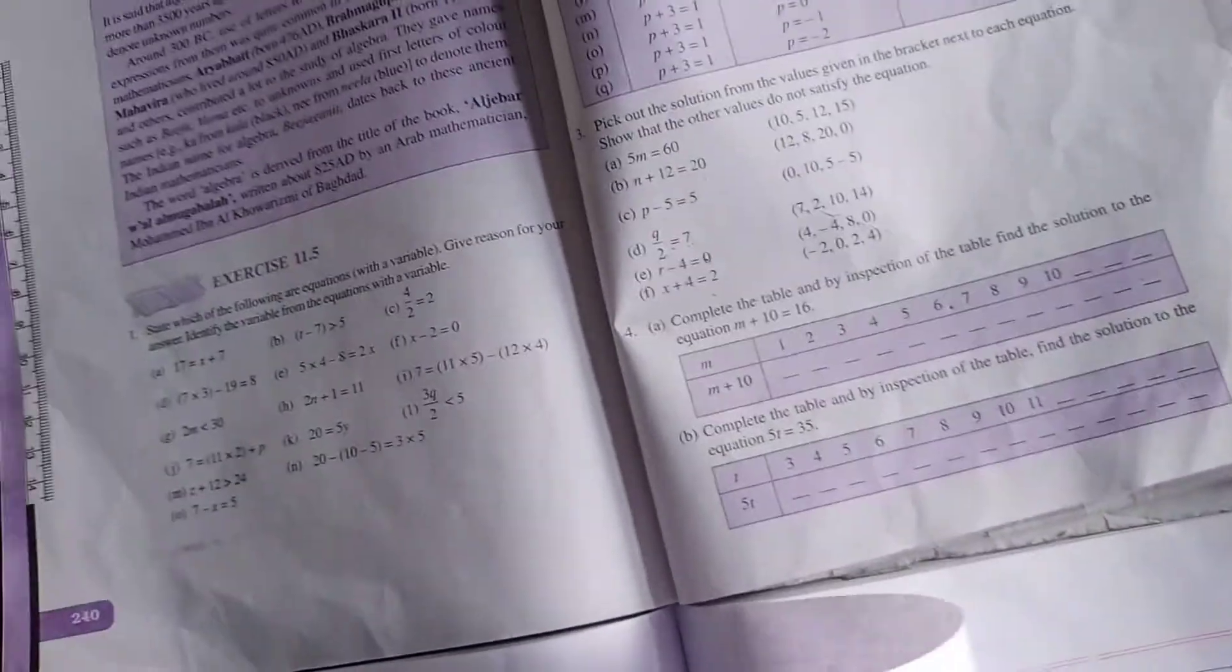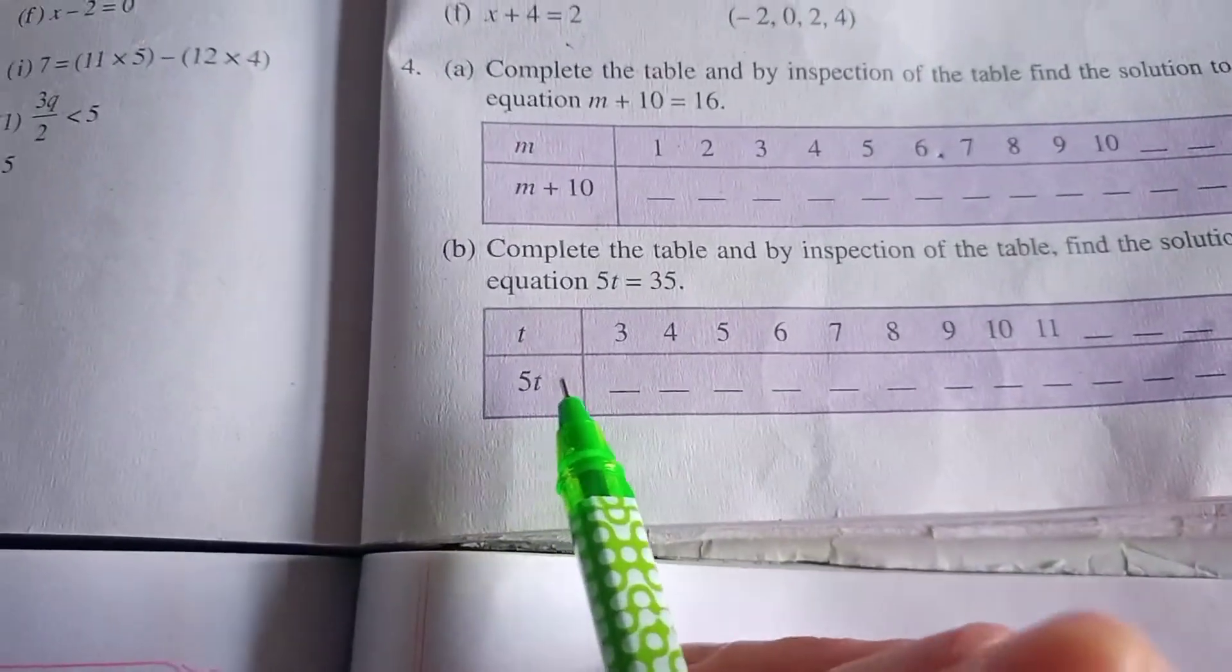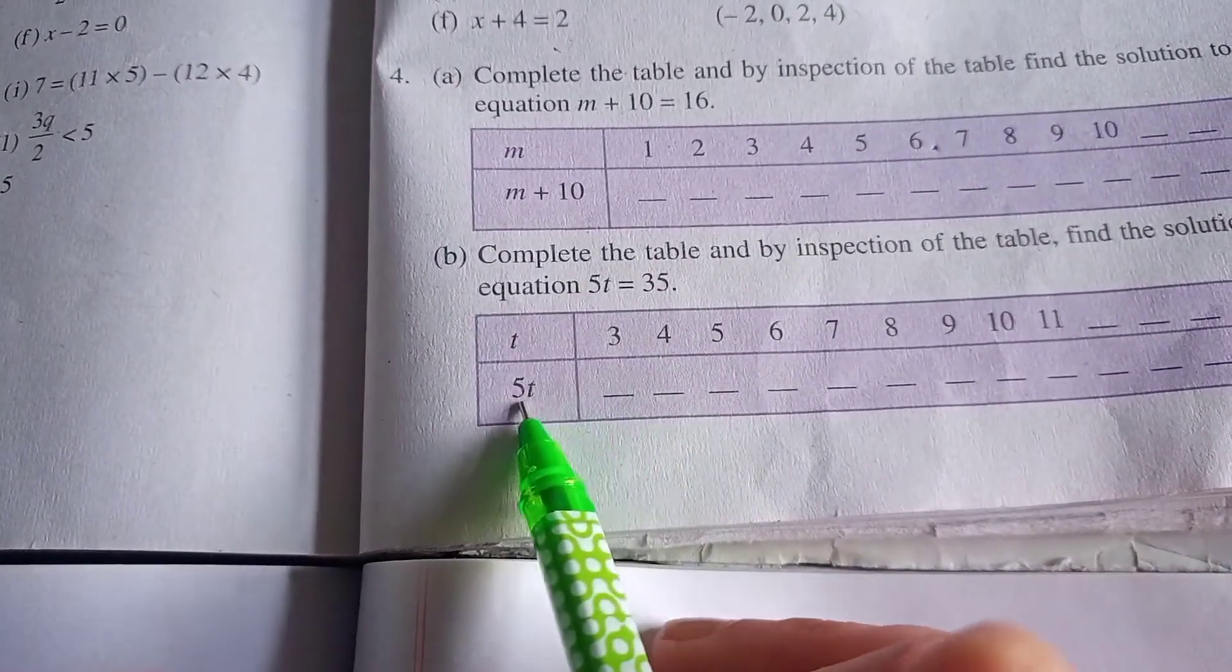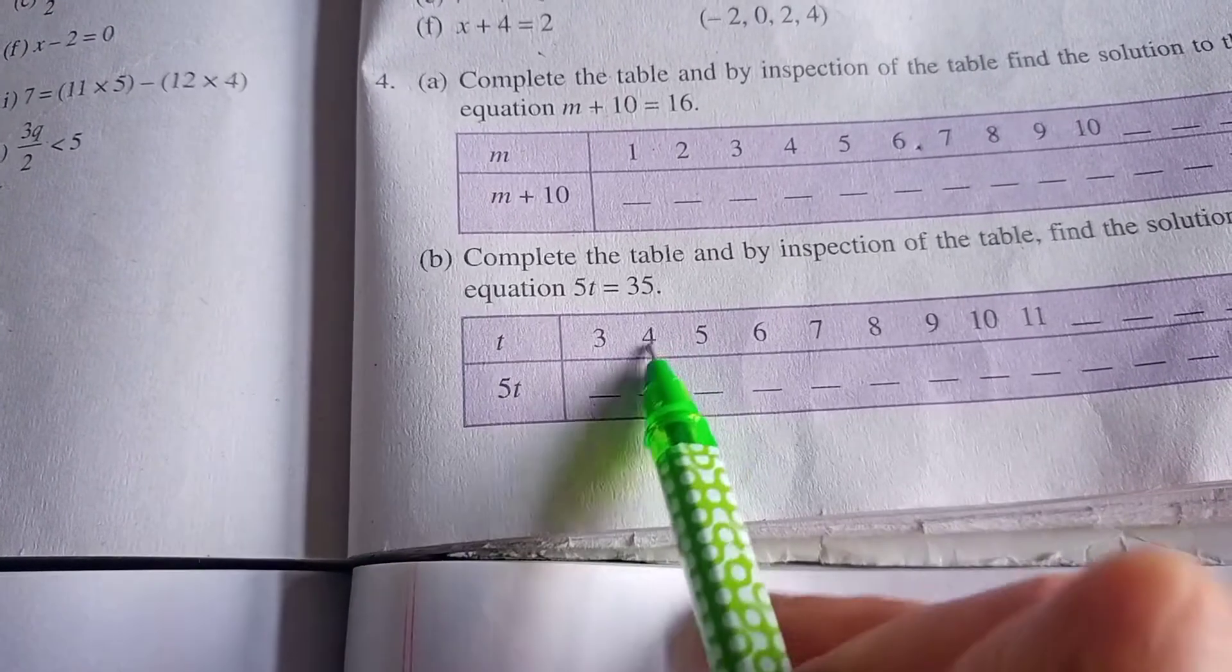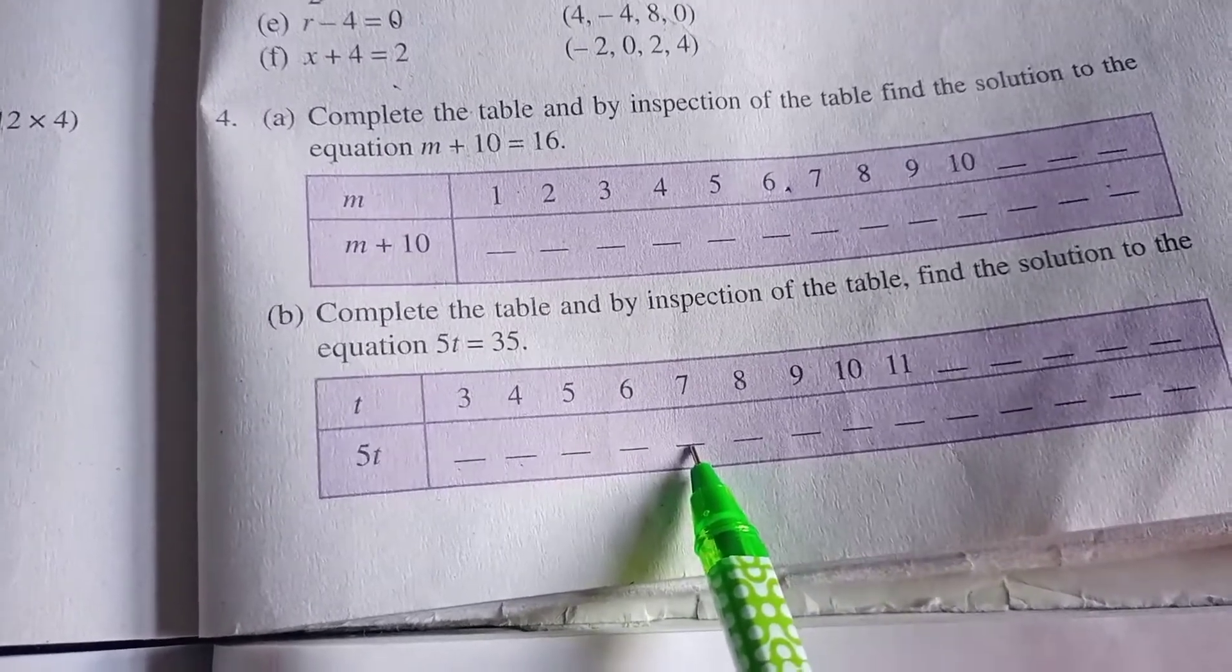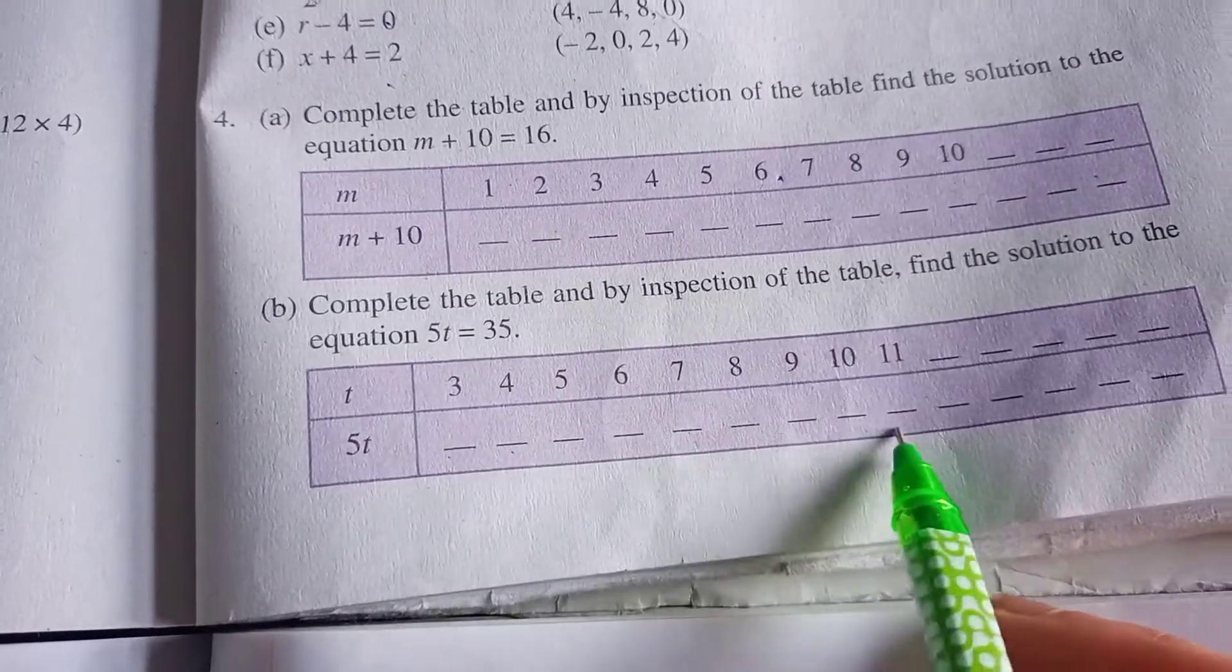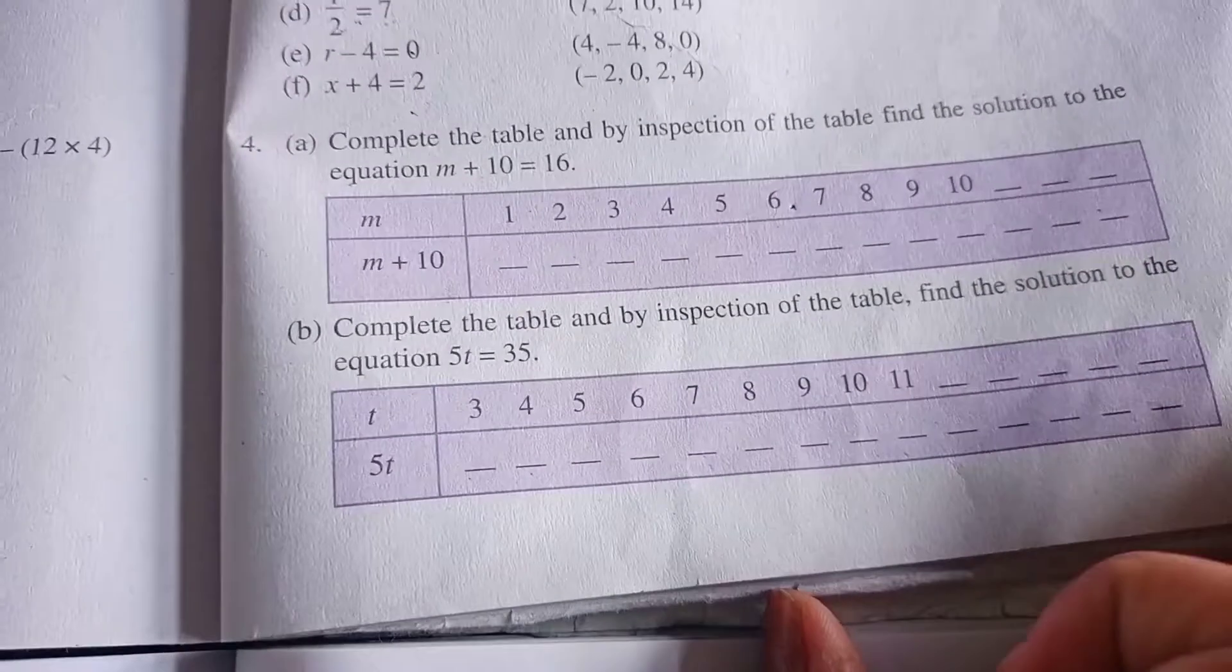This was question 4 part a. Now I am skipping part b. You will do it on your own. You just have to multiply: 5 times 3 is 15, 5 times 4 is 20, and so on. You have to continue till you get 35 as the answer.